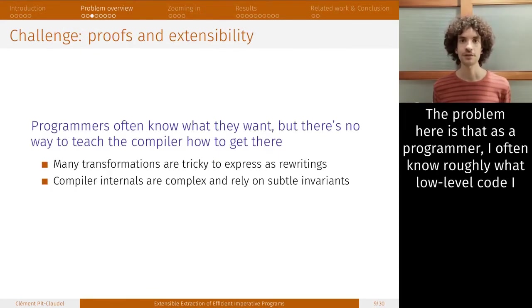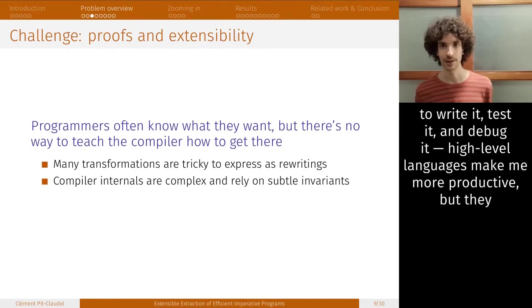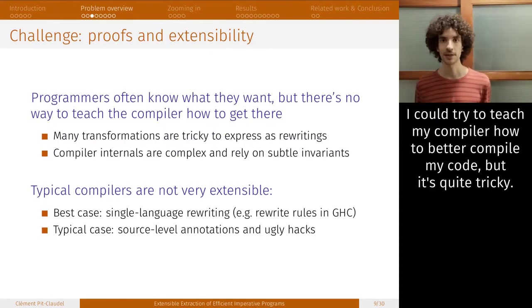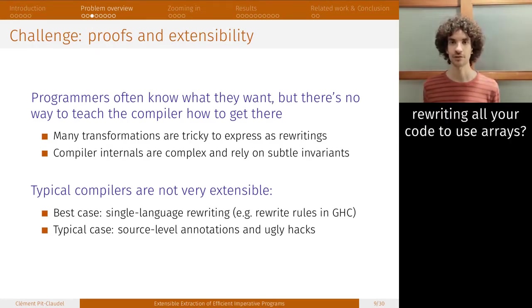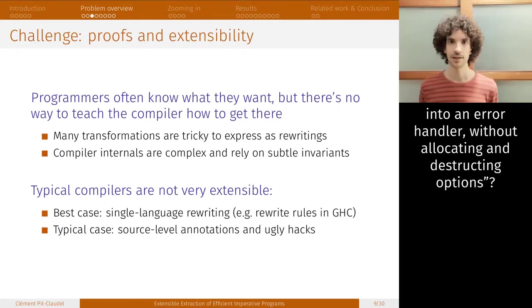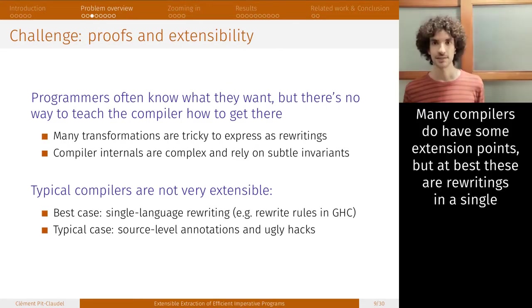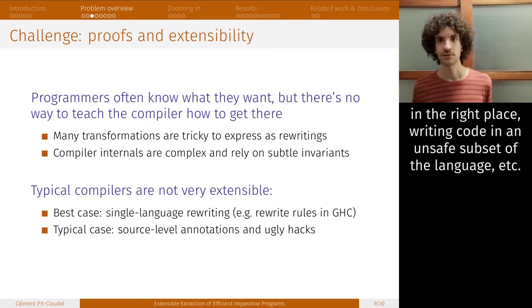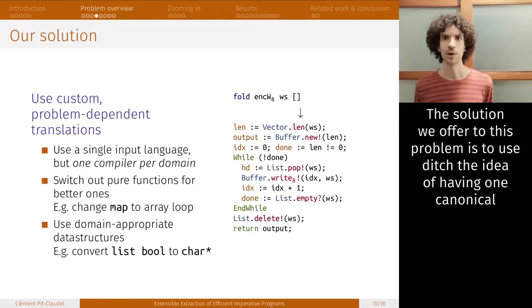The problem here is that as a programmer, I often know roughly what low level code I want to get, but I can't be trusted to write it correctly, and I can't afford time to write it, test it, and debug it. High level languages do make me more productive, but they also cost me in terms of performance. I could try to teach my compiler how to better compile my code, but it's quite tricky. How do you tell your compiler this list should be implemented as an array without rewriting all your code to use actual arrays? How do you say this error monad should be implemented with a goto jumping straight into an error handler without allocating and distracting options? Many compilers do have extension points, but at best, these are rewritings in a single language.